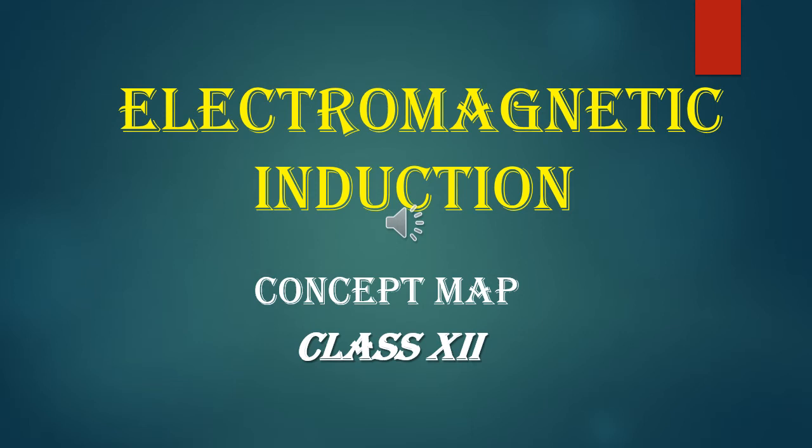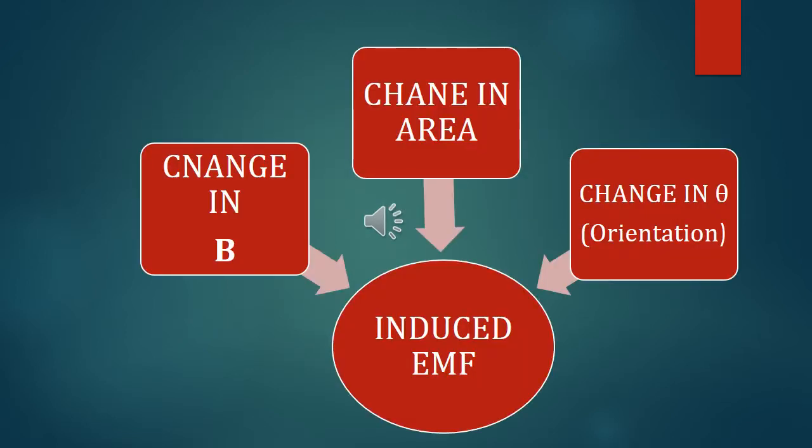Quick revision of the chapter electromagnetic induction, which is important from the exam point of view. What are the causes of induced EMF? First, change in magnetic field. Second, change in area. Third, change in angle between magnetic field and the area vector of the coil.